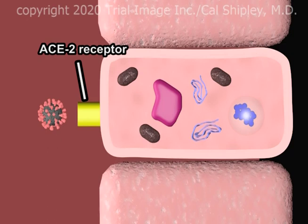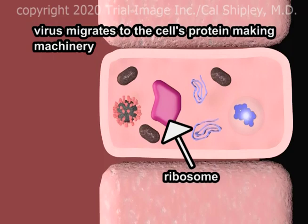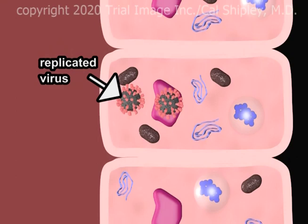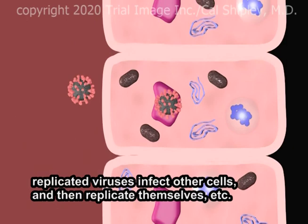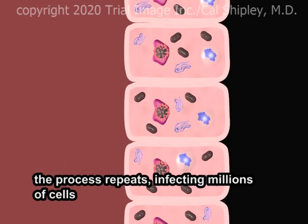Once the COVID-19 virus has bound itself to the ACE2 receptor, it enters the epithelial cell. Once in the cell, the virus migrates to the cell's protein synthesis machinery and, utilizing its RNA strand as a template, begins to replicate itself. This ability to use the host machinery to replicate itself is common to all infectious viruses. The newly minted viruses in turn infect other epithelial cells, so that in a relatively short space of time, a single virus particle can be responsible for millions of infected host cells.